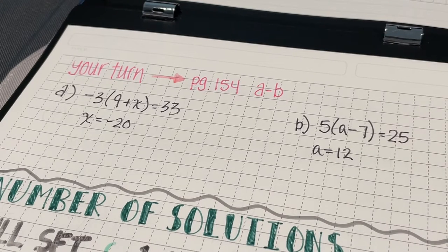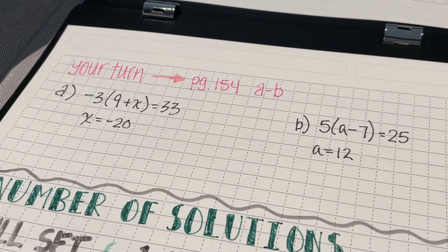For problem A, I got a solution of X equals negative 20. And in problem B, my solution was A equals 12.